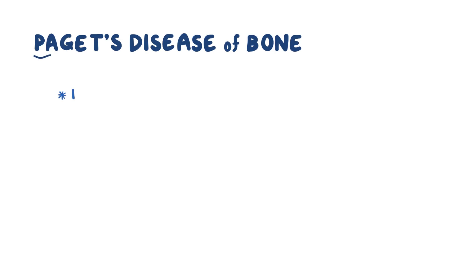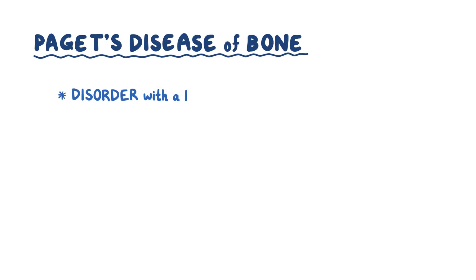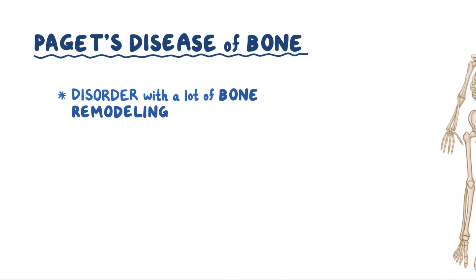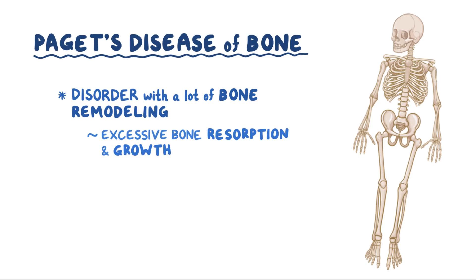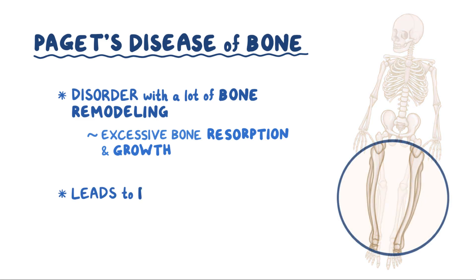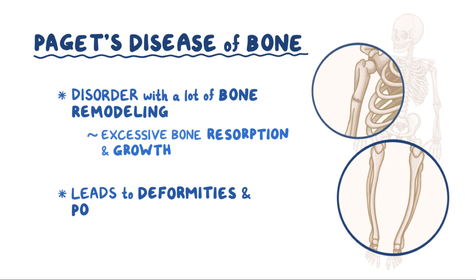Paget's disease of bone is a disorder in which there's a lot of bone remodeling that happens in some regions of the bone. Typically, there's excessive bone resorption followed by excessive bone growth, and that leads to skeletal deformities and potential fractures.